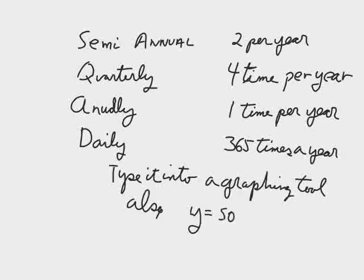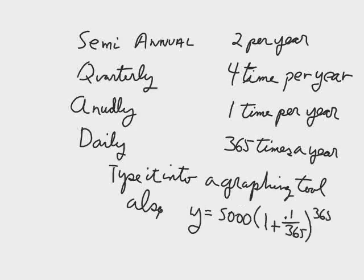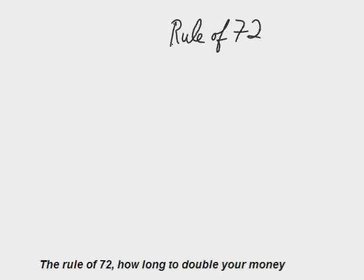There's what the words mean. Semi-annual means two per year. Try typing that equation into a graphing calculator. You'll see your money growing, just like we did in Unit A.